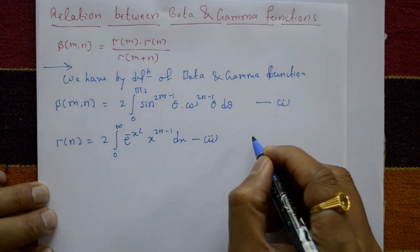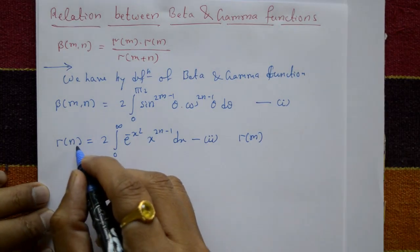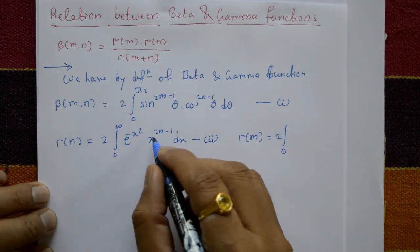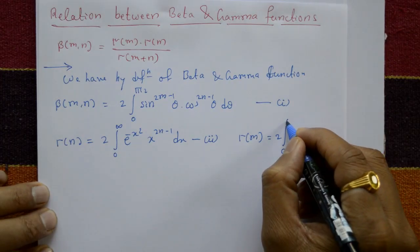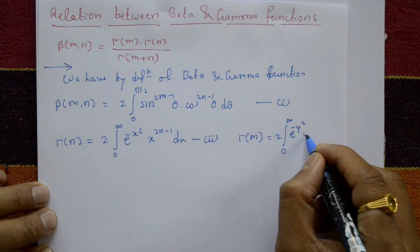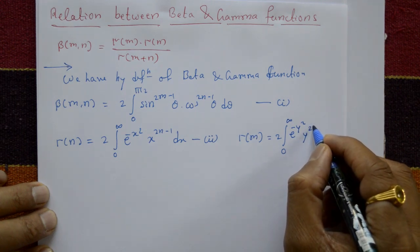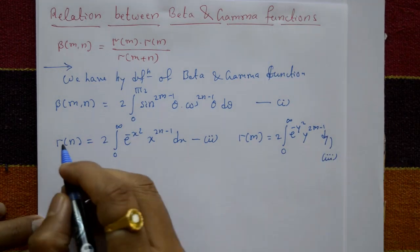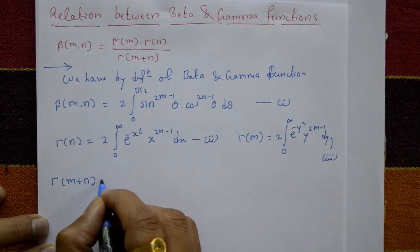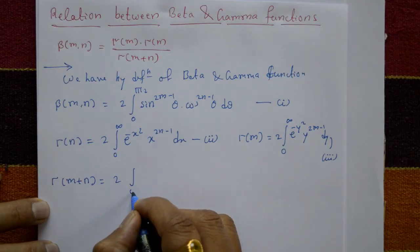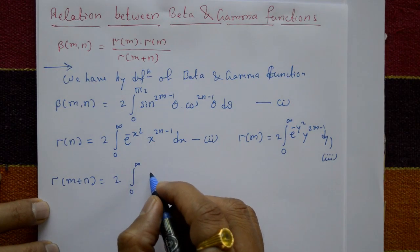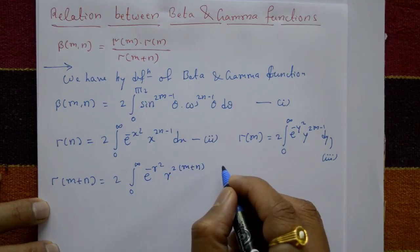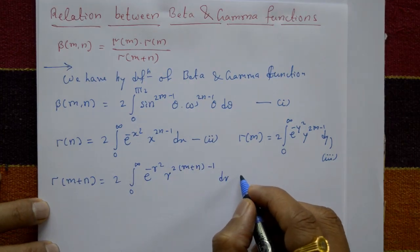Similarly, Gamma(m) is obtained by changing the variable x to y: Gamma(m) equals 2 times the integration from 0 to infinity of e to the power minus y squared times y raised to (2m−1) dy. This is equation number 3. Also, Gamma(m+n) equals 2 times the integration from 0 to infinity of e to the power minus r squared times r raised to 2(m+n)−1 dr. This is equation number 4.